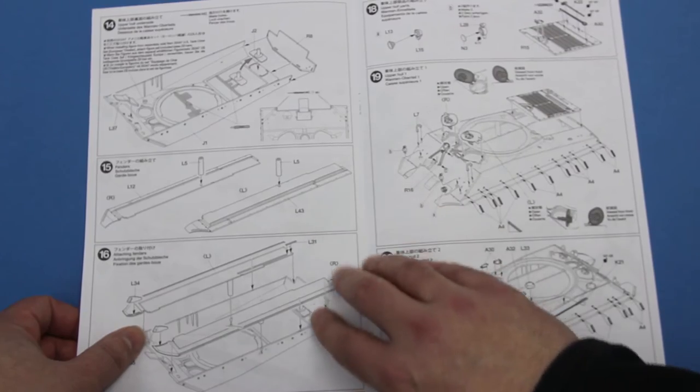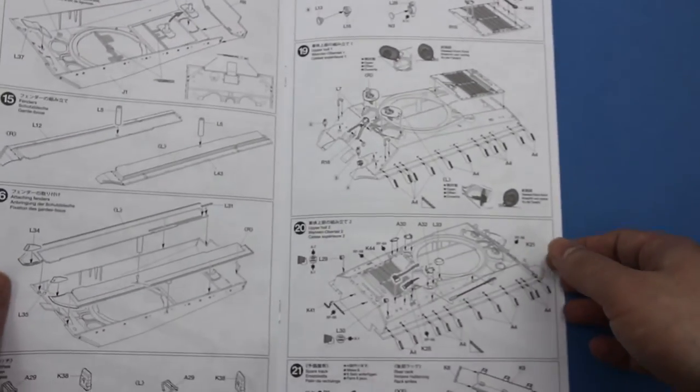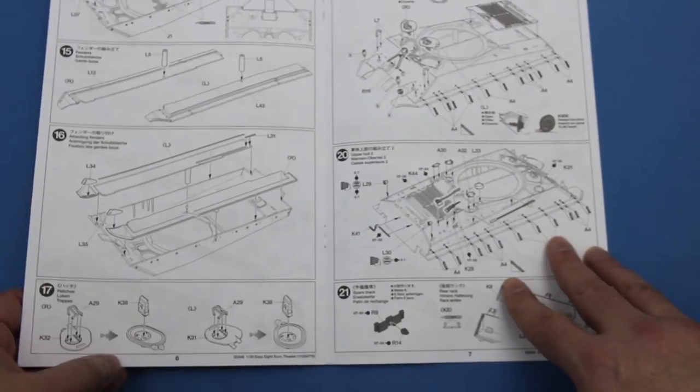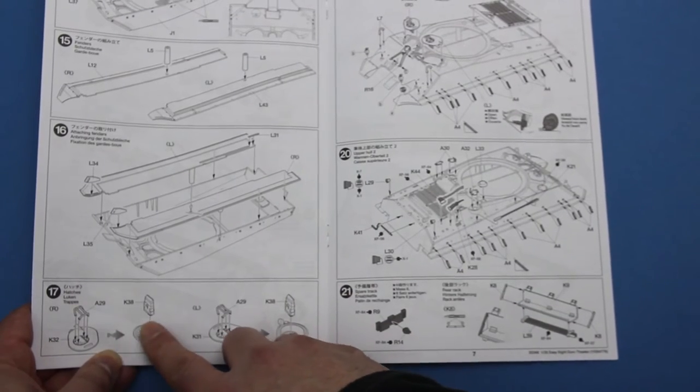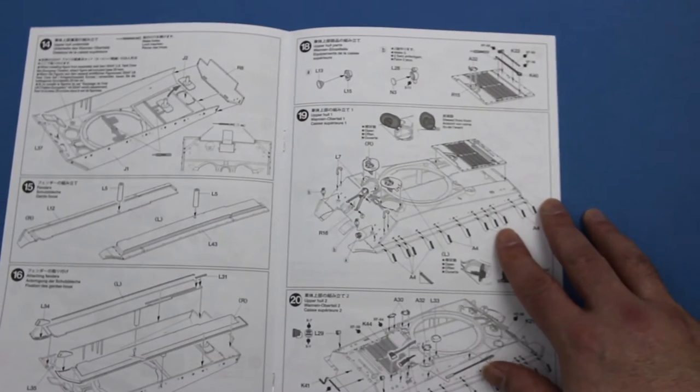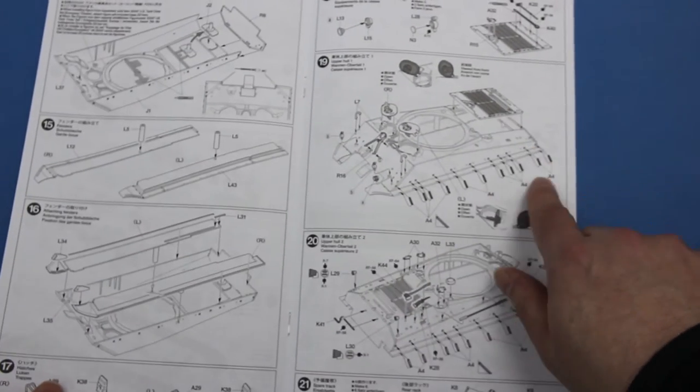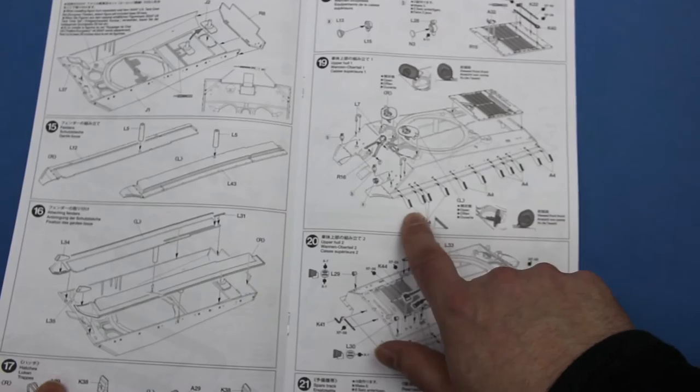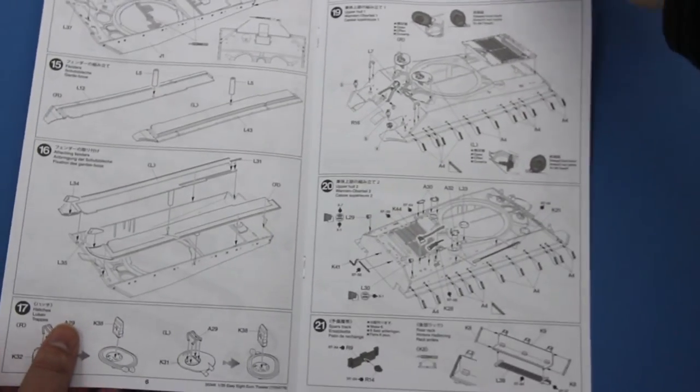And then assembling the upper hull and the fenders. Nice to see there's actually some blanking here for the sponsors. Adding the periscopes to the drivers and assistant drivers hatches. Adding the stays here for the fenders.